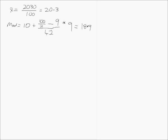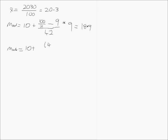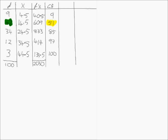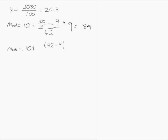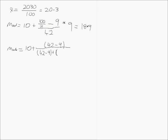For the mode, the lowest value is 10. F1 is 42, F2 (the frequency preceding the modal category) is 9, and F3 (the frequency after) is 34. So we calculate: 10 + (42 − 9) / ((42 − 9) + (42 − 34)) × 9, giving us a modal value of approximately 17.2. We have now calculated all measures of central tendency: mean 20.3, median 18.9, and mode 17.2.